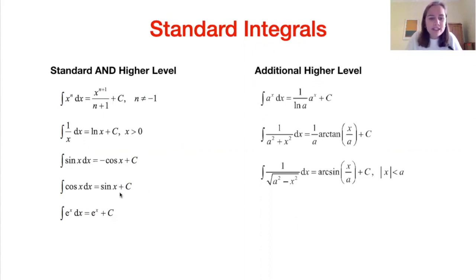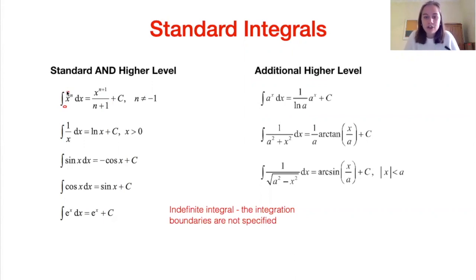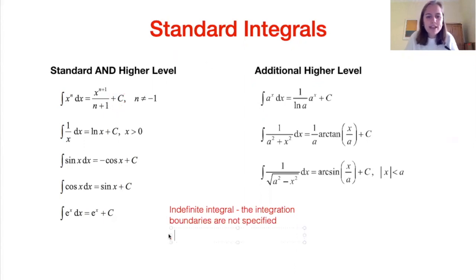One thing I want to point out is this C. Whenever we have something called an indefinite integral — an indefinite integral is where the integration boundaries are not specified. By integration boundaries, we mean there's no number above or below the integral telling us between which points to integrate — it's just a general integral. Whenever we have an indefinite integral, this is accompanied by something called the integration constant, plus C. It is added to all indefinite integrals.